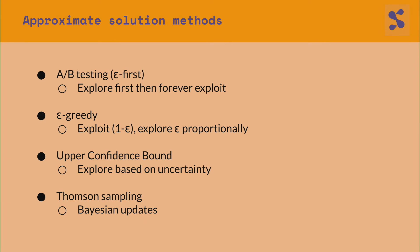There are lots of approximate solution methods that do very well on various reward distributions and are used successfully in practice. You can think of A-B testing as one of them. In the multi-armed bandit literature it's sometimes called an epsilon-first strategy, where you have a time period where you first explore all possible options uniformly at random to gather evidence. Then at some point you decide this is your best possible choice and you forever exploit that one — which is basically what A-B testing does.